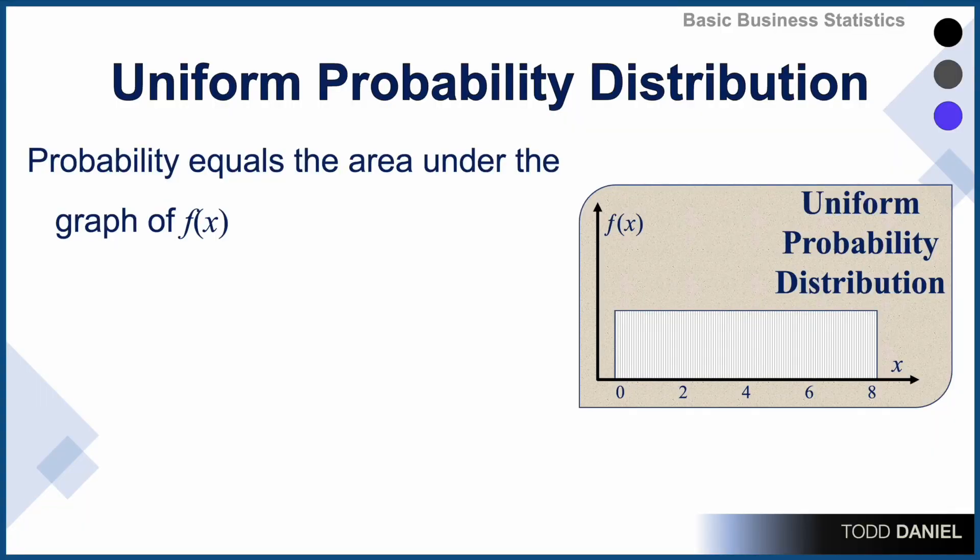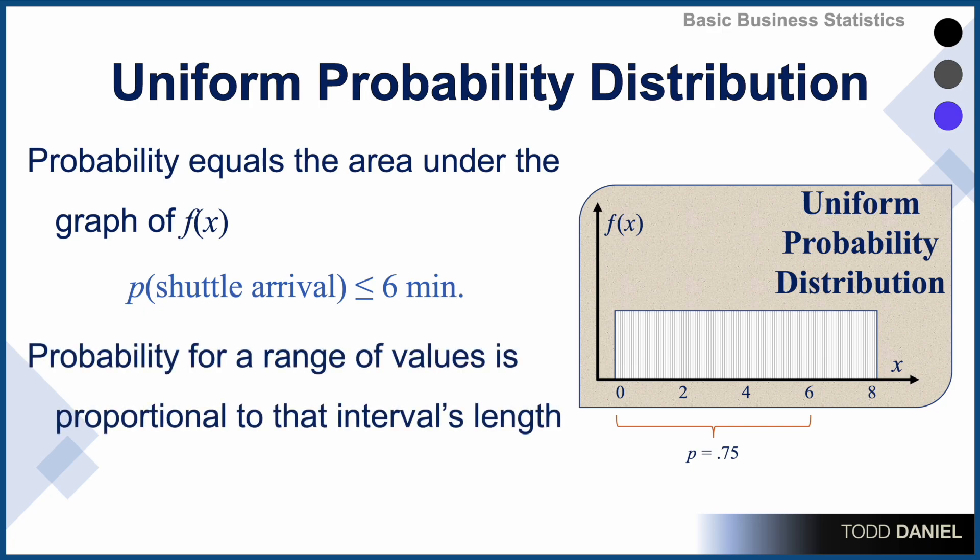The probability in a uniform distribution equals the area under the graph of the frequency. For instance, the probability of shuttle arrival less than or equal to six minutes, when the time frame is a maximum of eight minutes, is three-quarters of the area underneath the graph. Therefore, the probability of arrival in less than or equal to six minutes is .75. The probability for a range of values is proportional to the length of the interval.